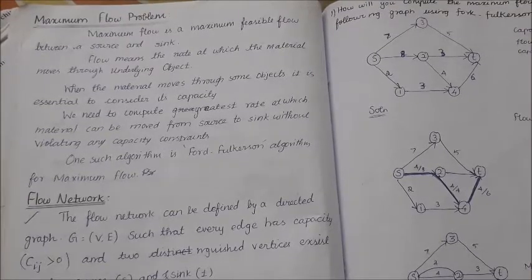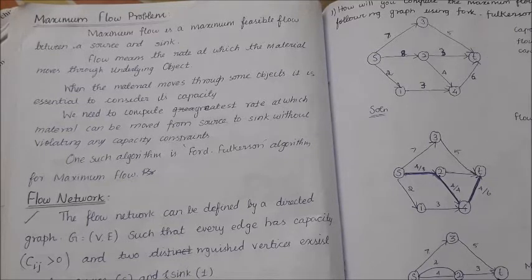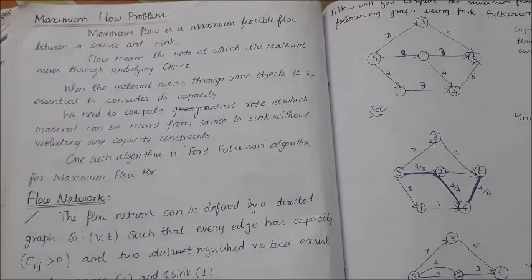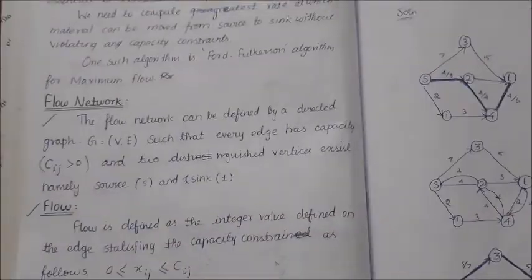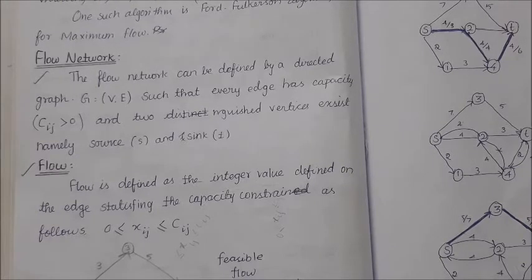Last session we discussed the simplex method under iterative improvement. Today we are going to discuss another problem under iterative improvement called the maximum flow problem. We are going to discuss the Ford-Fulkerson mechanism under the maximum flow problem. Flow means the rate at which material flows between two different objects. We will use a directed weighted graph with a set of vertices and edges.